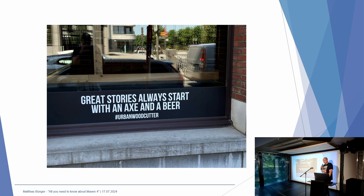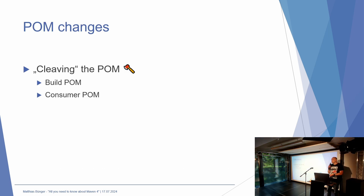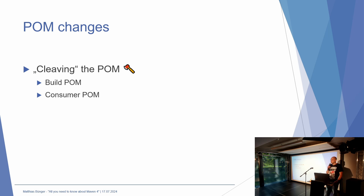Bevor wir in die größte Änderung reingehen: Maven 4 wird den ersten Schritt machen, die POM zu zerstückeln. Es wird zukünftig mit Maven 4 eine Build-POM und eine Consumer-POM geben. Die Consumer-POM ist das Format, wie es jetzt auch ist - das vom gesamten Ecosystem, egal ob IDEs, andere Build-Tools oder sonst irgendwas, weiterhin konsumiert werden kann. Und die Build-POM ist eine davon separat getrennte POM.